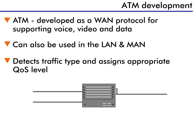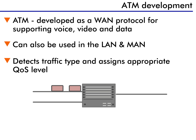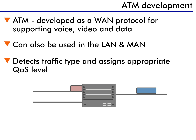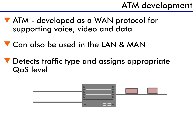In this example, the low-priority traffic arrives at the switch first. Since switches work on a first-come, first-served basis, the other traffic, even though it has higher priority, must wait. Prior to ATM, the only way to deal with this problem was to increase the bandwidth, which made the delay shorter, but did not resolve the underlying problem.